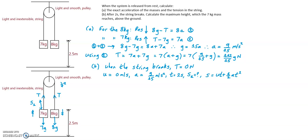The SUVAT equation involving those four variables will be s equals ut plus a half at squared. Substituting: S1 equals zero plus a half times the acceleration g over 15 — taking g as 9.8 — over 15, times t squared, 2 squared. And that equals 1.307 meters. So after it's risen 1.307 meters, the string breaks and the tension is now zero.